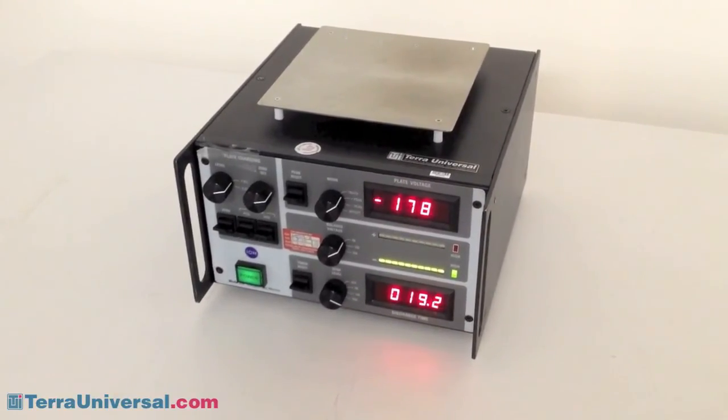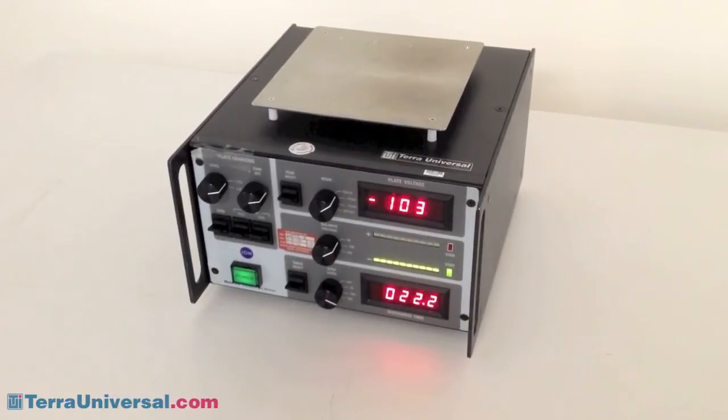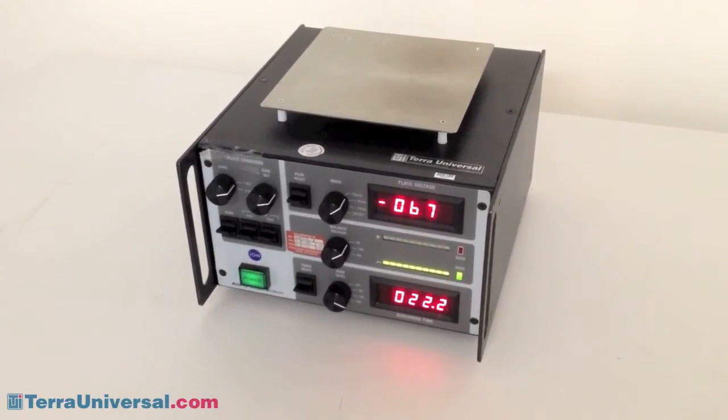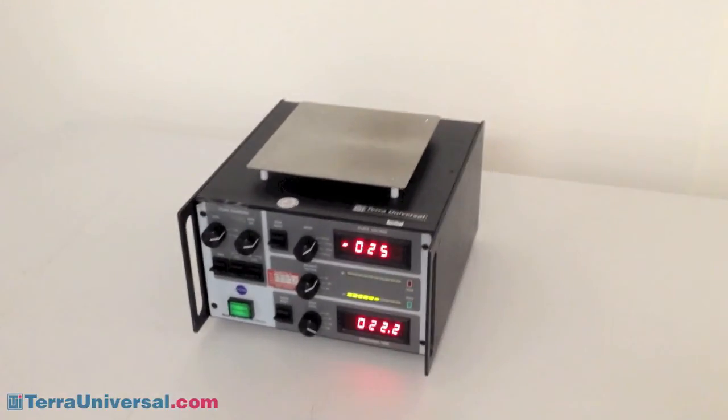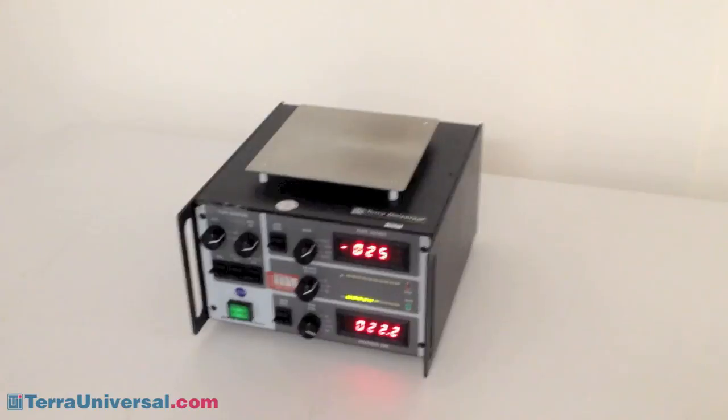In this test setup, our fan filter unit provides airflow of about 90 feet per minute. It took 22.2 seconds to neutralize the negative surface charge. Your timing will vary depending on the ambient circumstances.